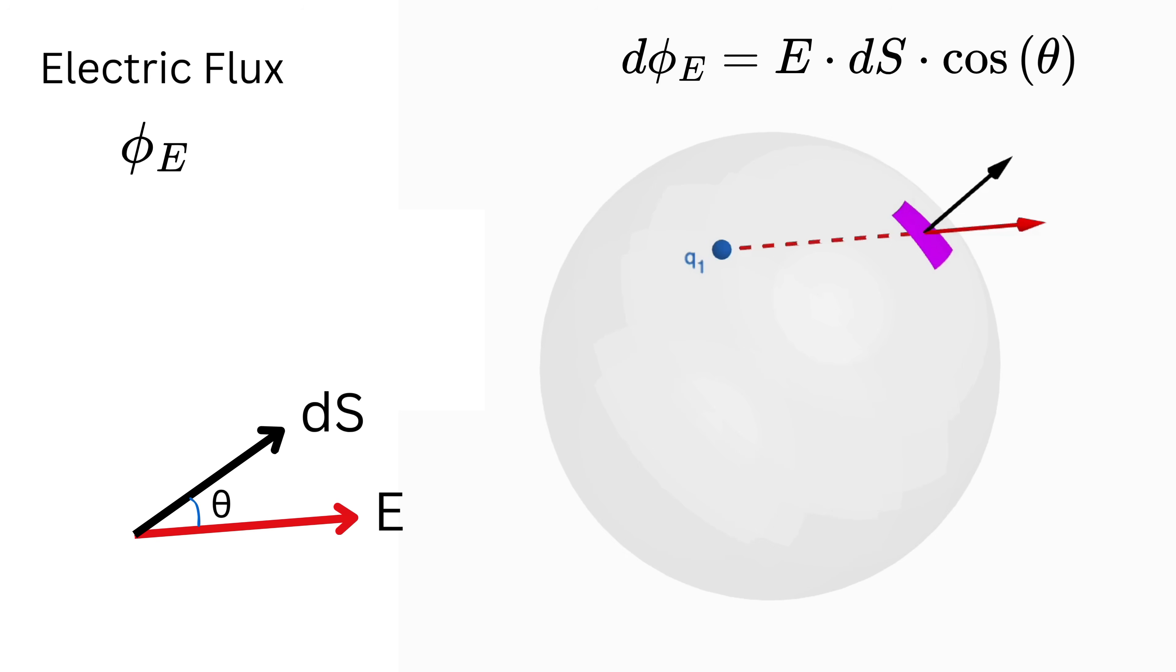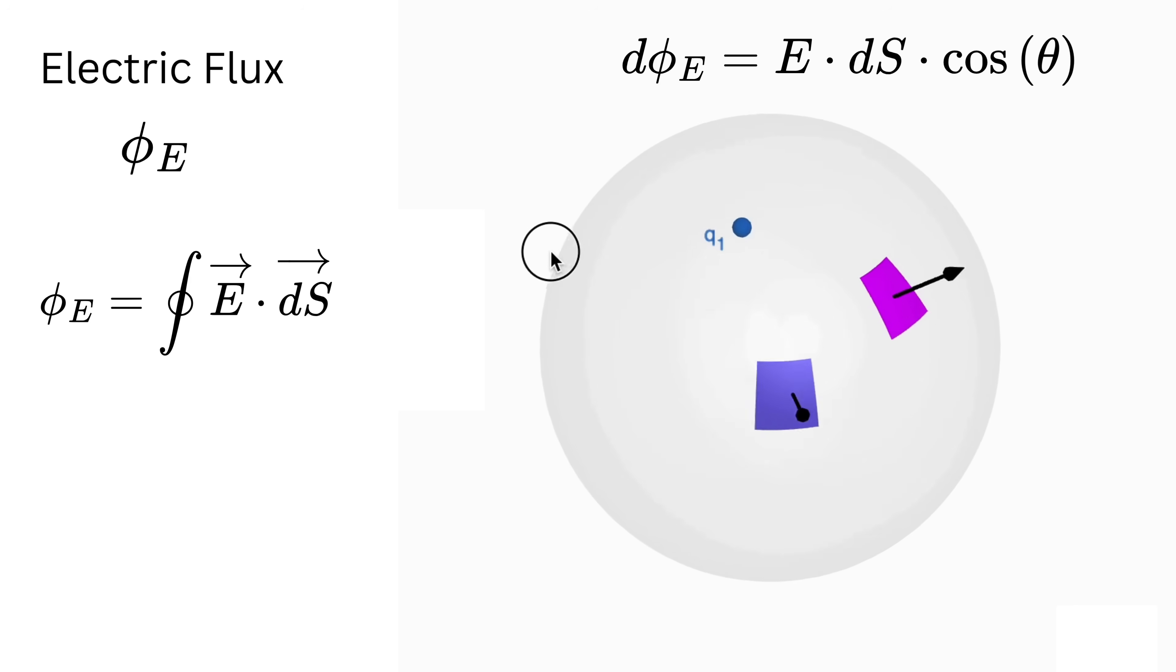This tells us how much of the field actually goes through that tiny patch. Now to get the total flux through the entire closed surface, we add up the contributions from all the tiny patches. In math language, this adding up is written as a closed surface integral of vector E dot with vector dS. Here the small area of each patch is itself a vector dS that points perpendicular to the surface at that patch like this. Then the dot product between two vectors here automatically takes care of the angle between the field and the patch. So this way, flux helps convert the field lines, which is a vector, into a single number that measures how much electric field actually passes through a surface.